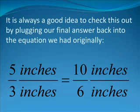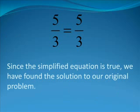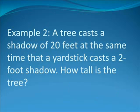It is always a good idea to check this out by plugging our final answer back into the equation we had originally. 5 inches divided by 3 inches is equal to 10 inches divided by 6 inches. Simplifying, 5 over 3 is equal to 10 over 6, and 10 over 6 is equal to 2 times 5 divided by 2 times 3, which is equal to 5 divided by 3 because the 2's cancel. Thus, we have found our final answer and verified it.